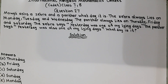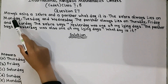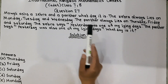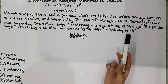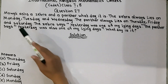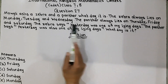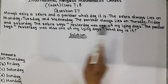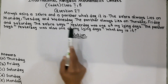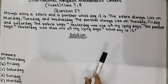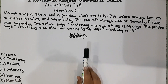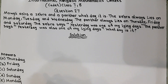Question number 27. The question is: Mowgli asks a zebra and a panther what day is it? The zebra always lies on Monday, Tuesday and Wednesday. The panther always lies on Thursday, Friday and Saturday. The zebra says yesterday was one of my lying days. The panther says yesterday was also one of my lying days. What day is it?